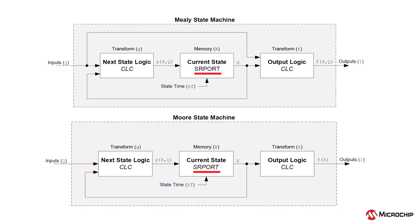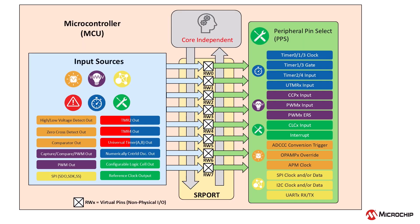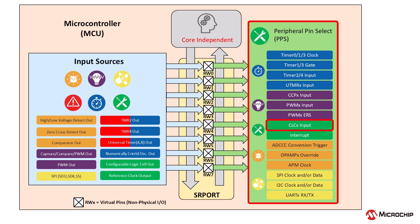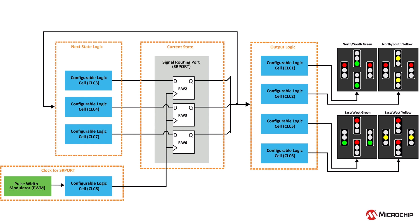CIPs like the signal writing port and configurable logic cell make this possible. The signal writing port acts as a virtual port, connecting internal peripheral outputs directly to other peripherals, such as the configurable logic cell, without external I/O pins. Together, they form a highly responsive state machine. The signal writing port holds the current state and updates every clock cycle, while the configurable logic cell processes inputs and state data to determine transitions. The configurable logic cell's output logic then generates outputs based on the state, completing the loop.